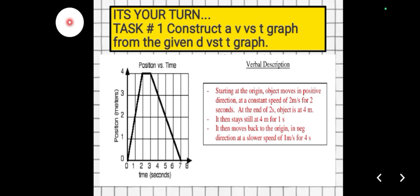Now it's your turn to answer these items. Task number 1: construct a velocity versus time graph from the given distance versus time graph. Position and distance are taken as the same meaning. You are also given a verbal description so you can draw out the motion of the object specifically. Write your answer on a piece of paper, take a photo, and submit it in Google Classroom.